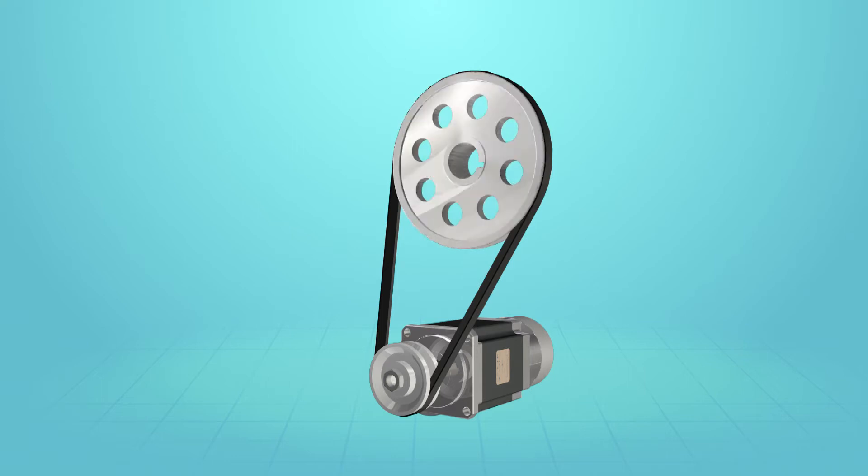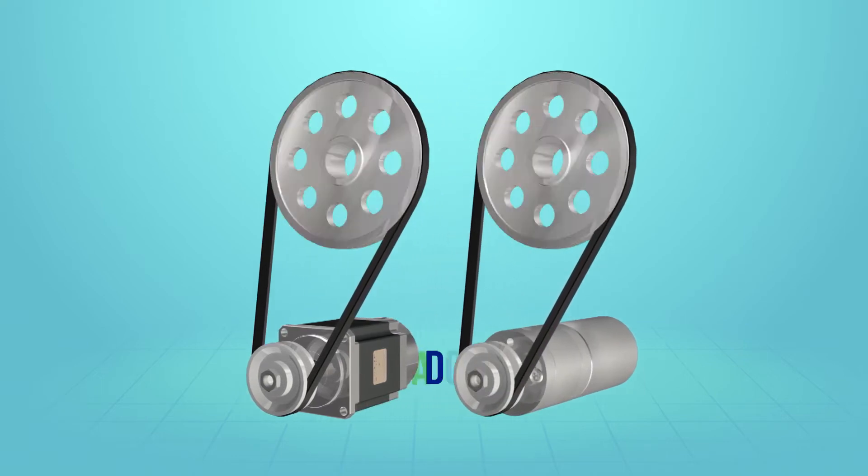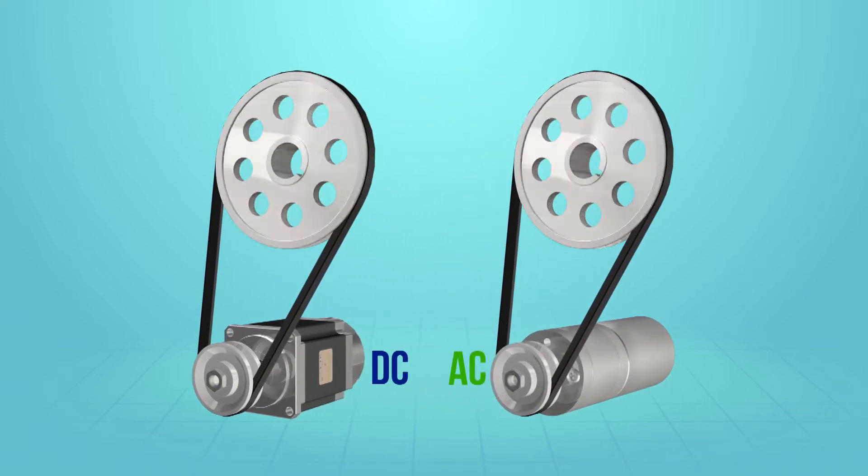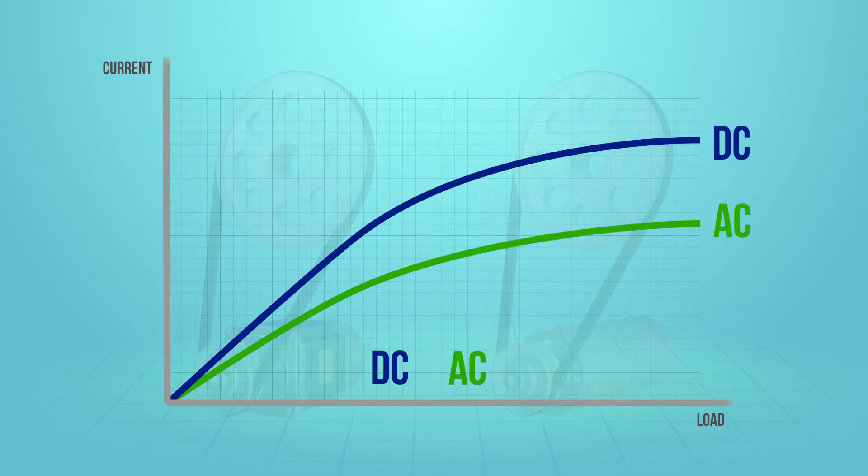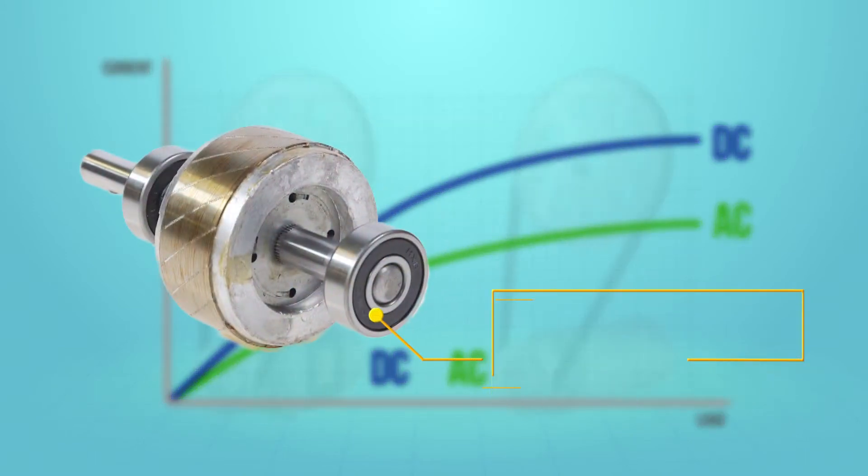If we apply a given load to an AC and DC motor and rotate them at the same speed, the AC type will draw much less current than the DC type. Most AC motors are brushless and do not require permanent magnets to operate.